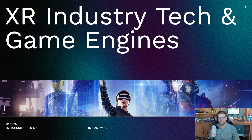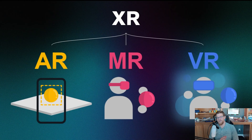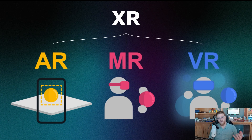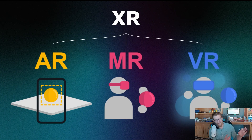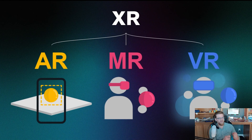So going straight into it, we have XR, which is the umbrella term meaning extended reality. We have AR, which more or less is a digital representation of data overlaid on top of your reality around you — any type of data that you see with a pass-through camera. Then there's mixed reality.